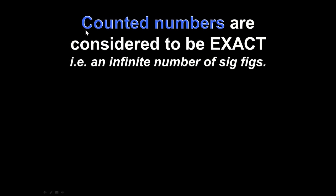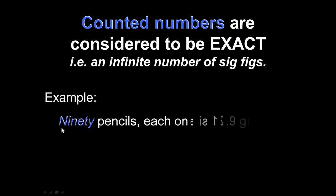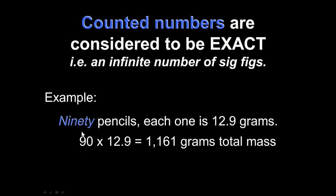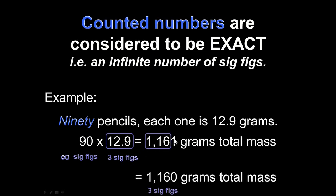A couple of important exceptions: counted numbers are exact and have an infinite number of sig figs. If I have exactly 90 pencils and each pencil measures 12.9 grams, I multiply 90 × 12.9. The 90 is a counted number with infinite sig figs; the 12.9 is a measurement with 3 sig figs. So the least is 3 sig figs, and we round the calculator's answer to 3 sig figs.